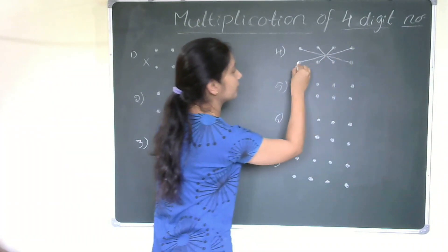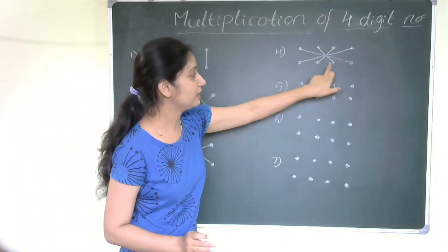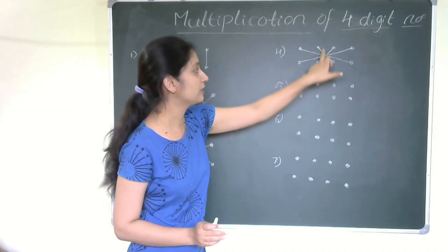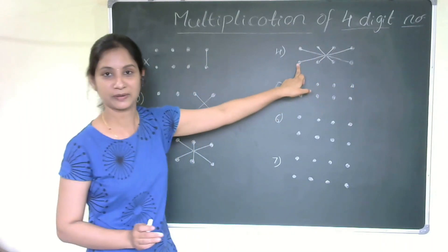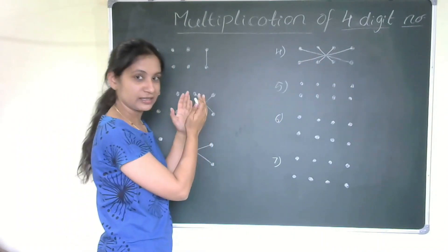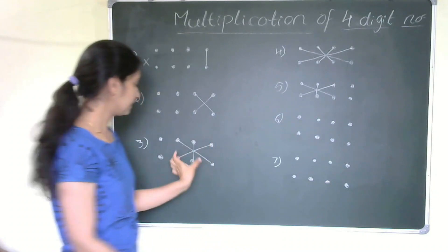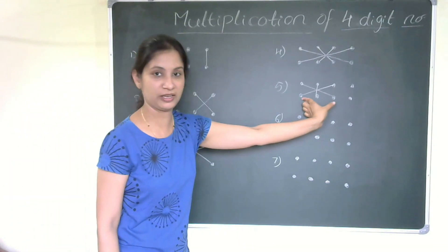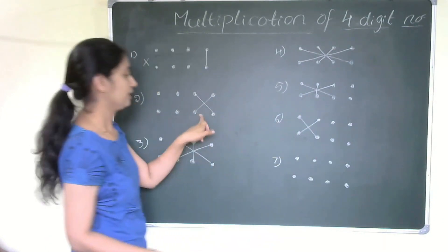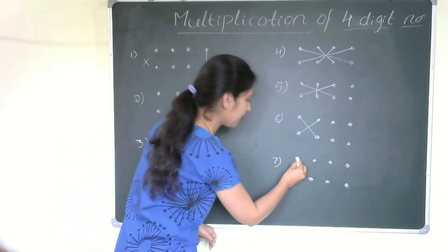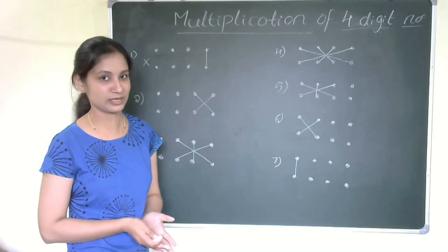Step four involves the middle four values — multiply crosswise and also upside down. Take the middle four values: multiply these two and these two, then this one with this one and this one with this one. Steps five and six mirror the same pattern but shift to the left-hand side. The final step seven is to multiply the leftmost two digits. These are the seven steps.